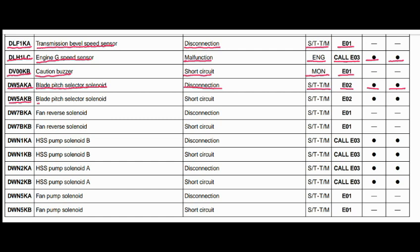Code DW5AKB. The faulty part is the blade pitch selector solenoid. The problem is a short circuit. The steering and transmission controller is related to this fault, and the action code is E05. Caution lamp will blink and caution buzzer will beep.